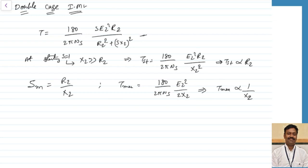In the induction motor, the torque is given by (180 / 2π·Ns) × (S·E2² × R2) / (R2² + S·X2²). At the time of starting, the slip is equal to one. Generally, the value of the reactance will be greater than resistance for the case of induction motor because of the leakage reactance. So the starting torque equals (180 / 2π·Ns) × E2² × R2 / X2², meaning the starting torque is proportional to the value of the rotor resistance.